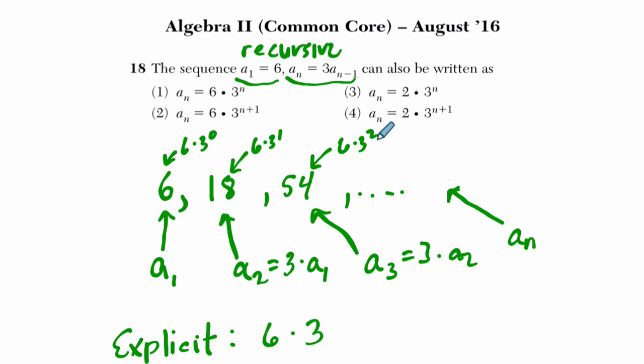The number of threes I'm multiplying by is always one less than the step number I'm on. Three, two is one less than the step number three. The power of one is one less than the step number two, and the power of zero is one less than the step number one. So it equals six times three to the, not to the n, but the n minus one. And that's our formula here.